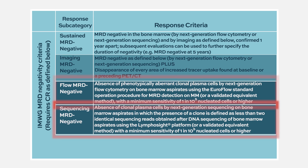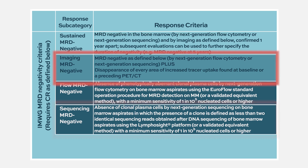The second method is MRD by next-generation sequencing, using tests like ClonoSEQ or Adaptive. The third method combines next-generation flow or sequencing with imaging — if you are MRD negative by flow or sequencing plus imaging, that represents another level of no evidence of disease.